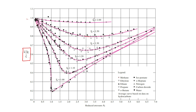At high reduced temperature TR equal to 2, and low reduced pressure equal to 1, Z approaches 1. At low reduced temperature TR equal to 1.1 and high pressure, Z deviates — approximately 1.1. This is the principle of corresponding states.